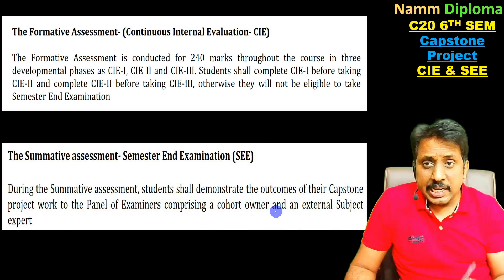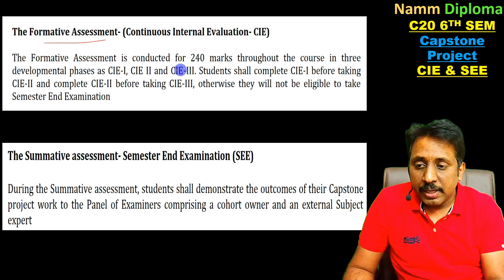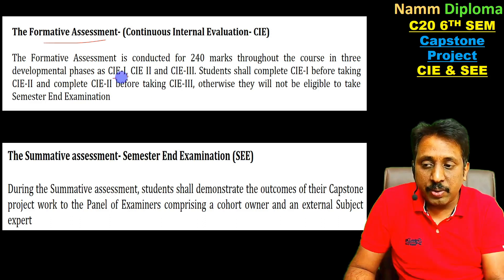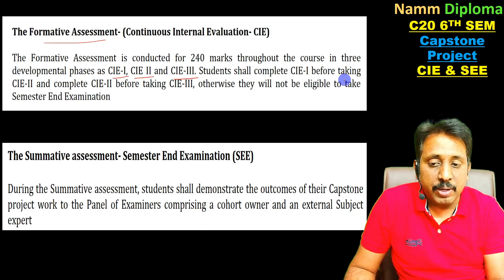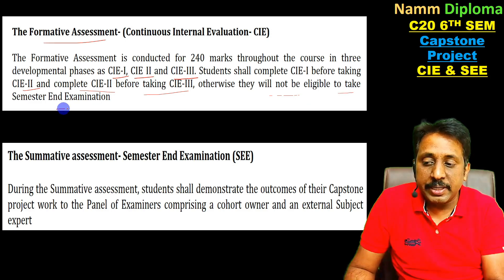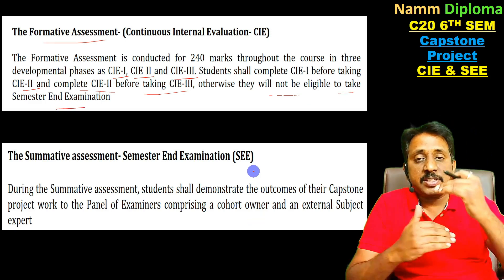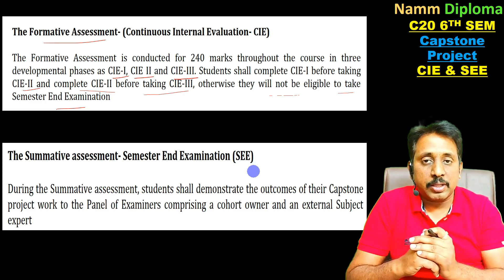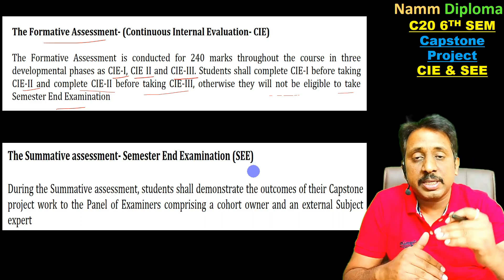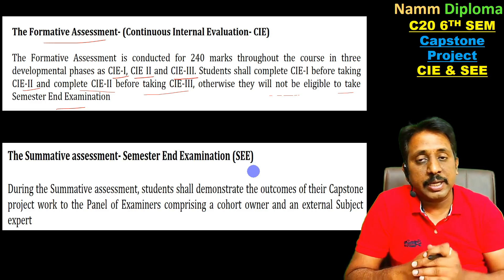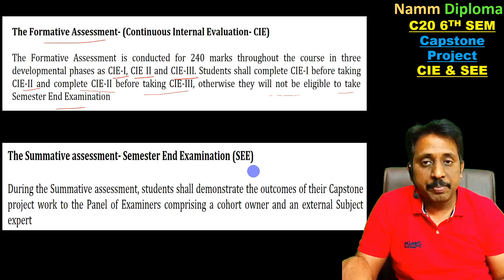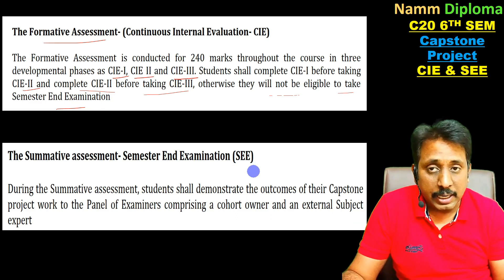The formative assessment is conducted for 240 marks throughout the course in three developmental phases: CIE 1, CIE 2, and CIE 3. Students shall complete CIE 1 before taking CIE 2, and complete CIE 2 before taking CIE 3. Otherwise they will not be eligible to take the semester end examination.